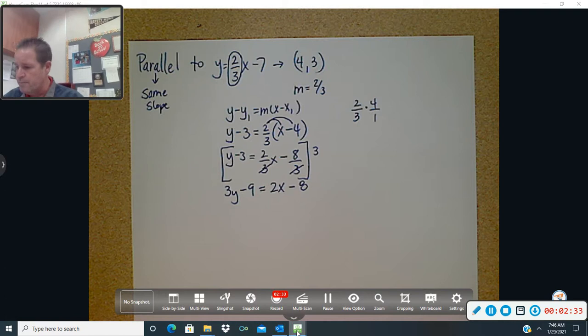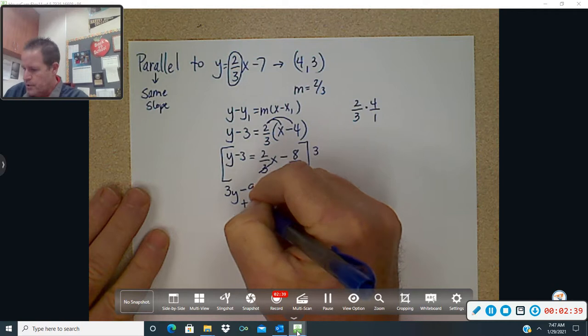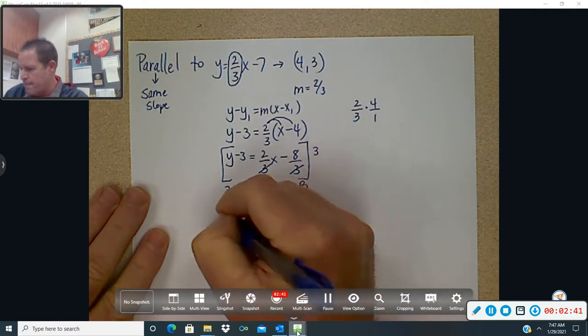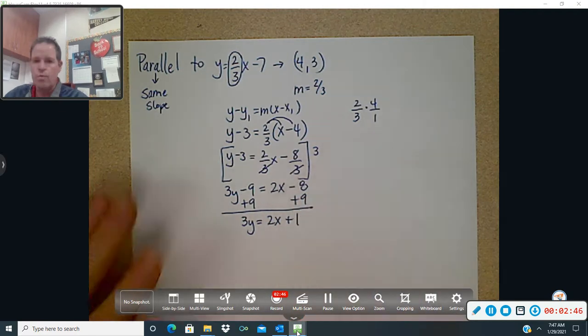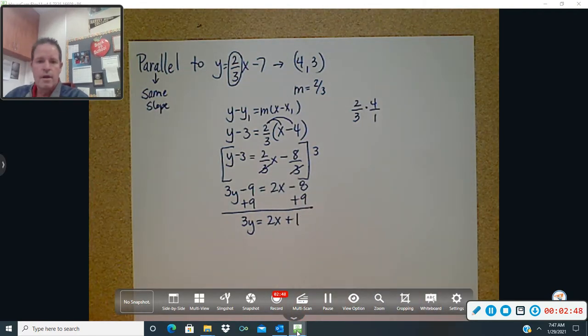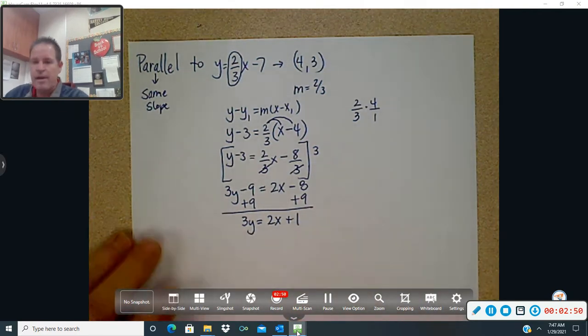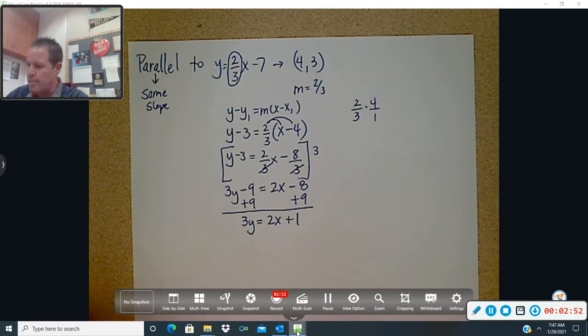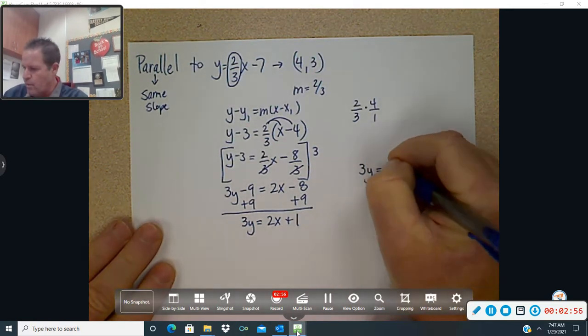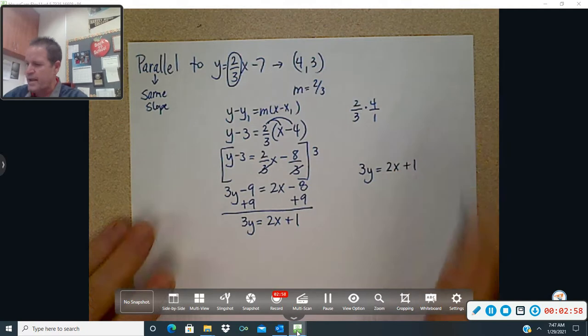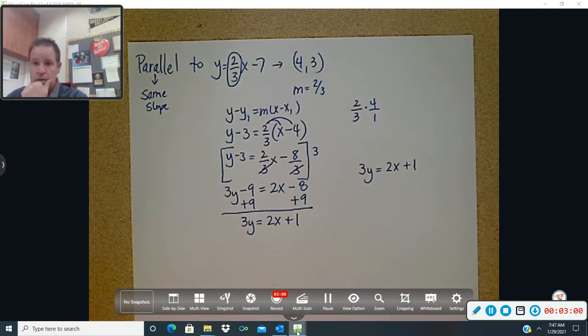Okay, so now we want to get y by itself for slope intercept form. So we're going to add 9 to each side, and we're going to have 3y equals 2x plus 1. Now, because I can see when I divide by 3, I'm going to get my fractions back. Remember, I was showing you this in class. To get standard form, I don't want fractions, so I'm just going to write this down over here and use that to find my standard form.